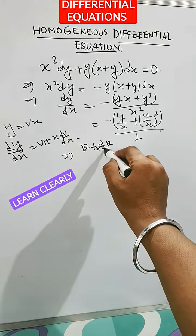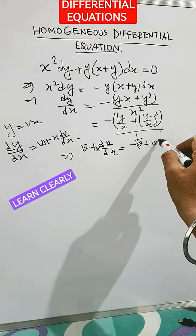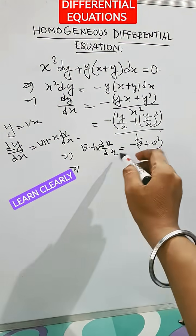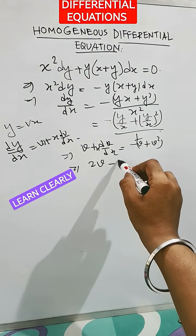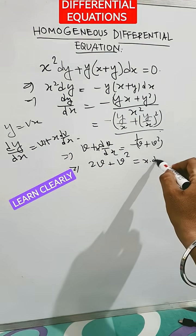So now 2v plus v² is equal to x into dv/dx.